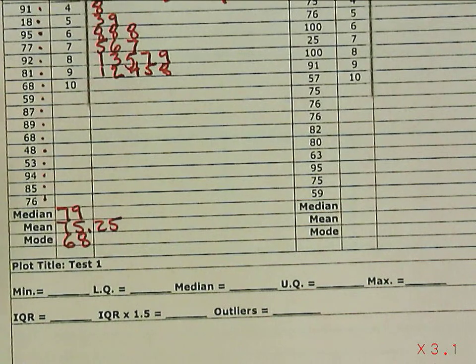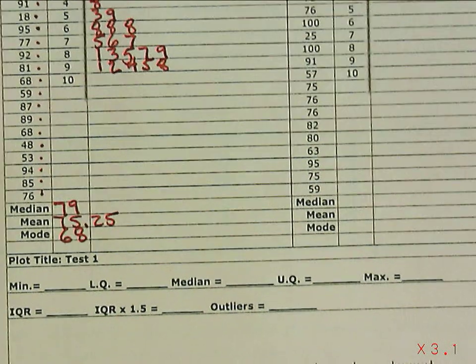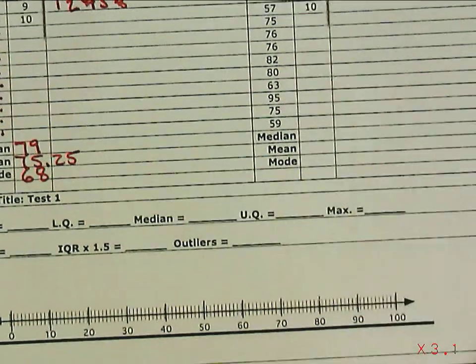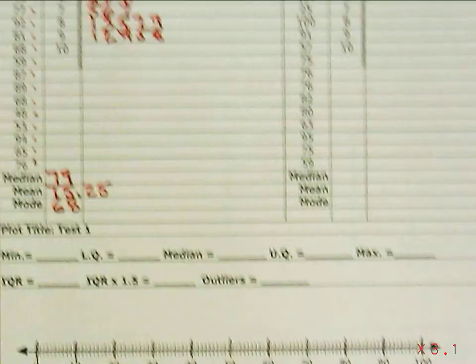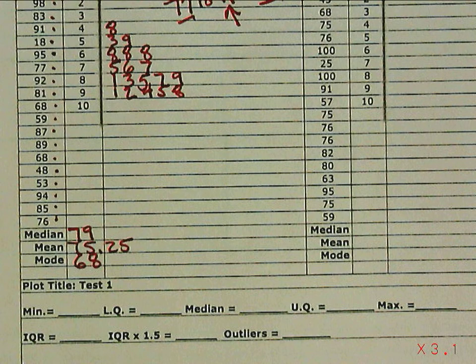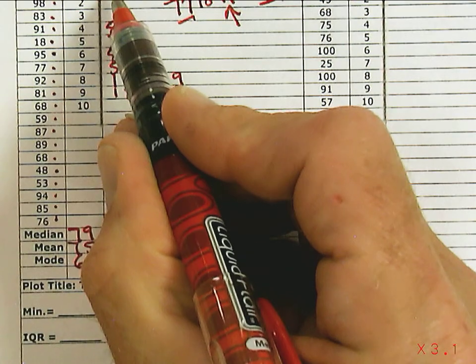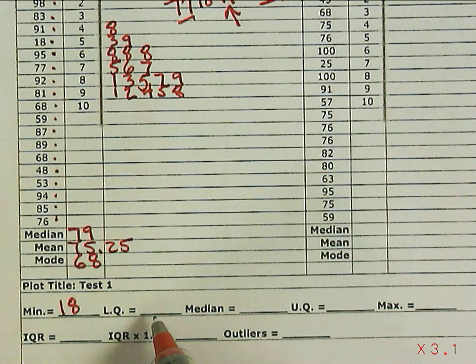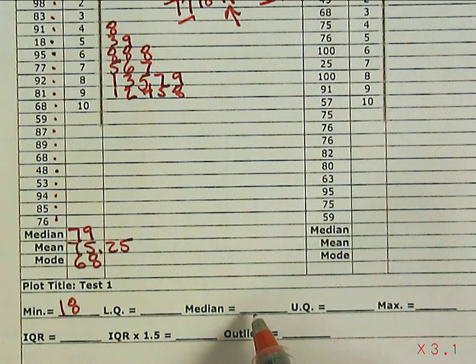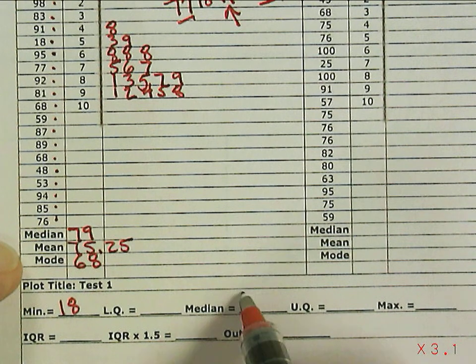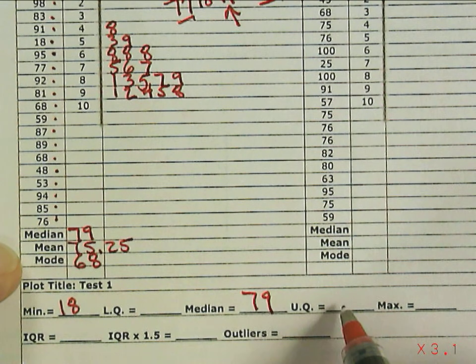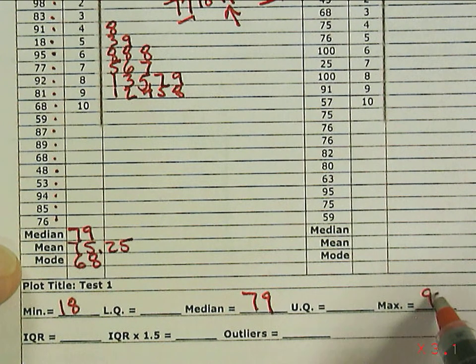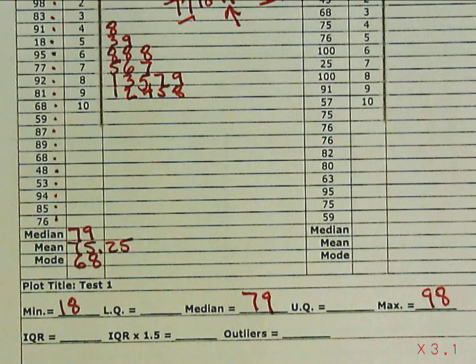We're not done yet because we want to use this data to make a five-number summary. We have part of that summary already because we have the minimum, the smallest number, which is 18. We don't have the lower quartile yet, but we have the median, which is 79. We don't have the upper quartile yet, but we do have the maximum, which is 98. So we have three of the five numbers already.